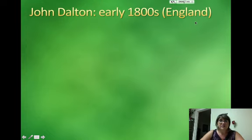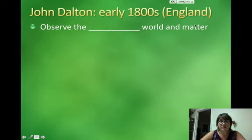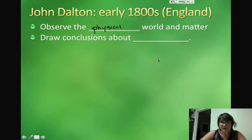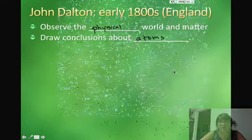Finally comes John Dalton. This wasn't until the early 1800s in England that John Dalton proposed some ideas about atoms. He was able to observe the physical world and make observations about matter, and through those observations, draw some conclusions about atoms themselves.